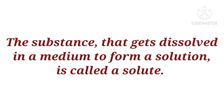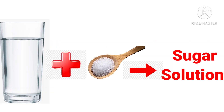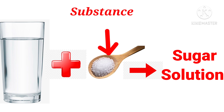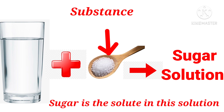The substance that gets dissolved in a medium to form a solution is called a solute. Like in the sugar solution, what is the substance? Sugar is the substance — it got dissolved in water to form the sugar solution. So sugar is the solute in this sugar solution.